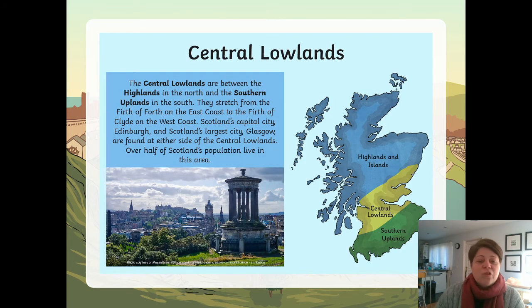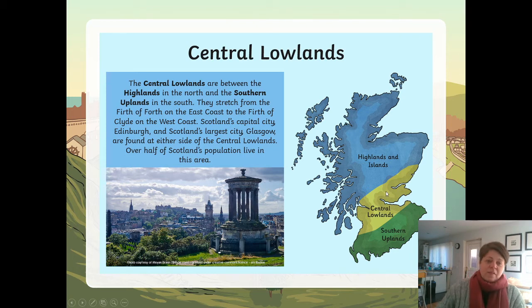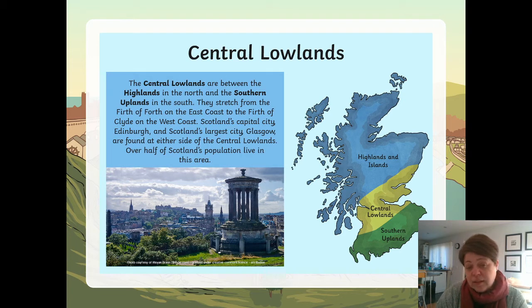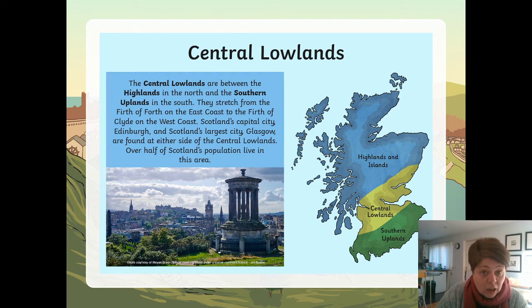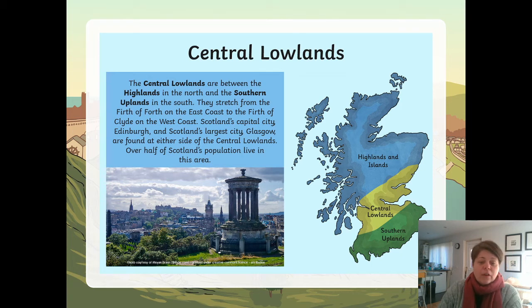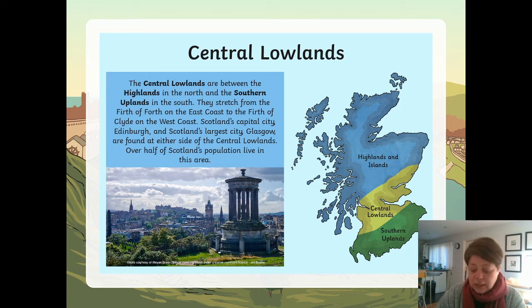The Central Lowlands — that's where we are, this yellow part in the middle — are between the Highlands in the north and the Southern Uplands in the south. They stretch from the Firth of Forth on the east coast to the Firth of Clyde on the west coast. Scotland's capital city Edinburgh and Scotland's largest city Glasgow are found at either side of the Central Lowlands. Over half of Scotland's population live in this area.